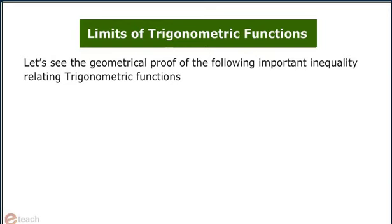Let's see the geometric proof of the following important inequality relating trigonometric functions: cos x is less than sin x divided by x is less than 1 for mod x greater than 0 and less than π by 2.